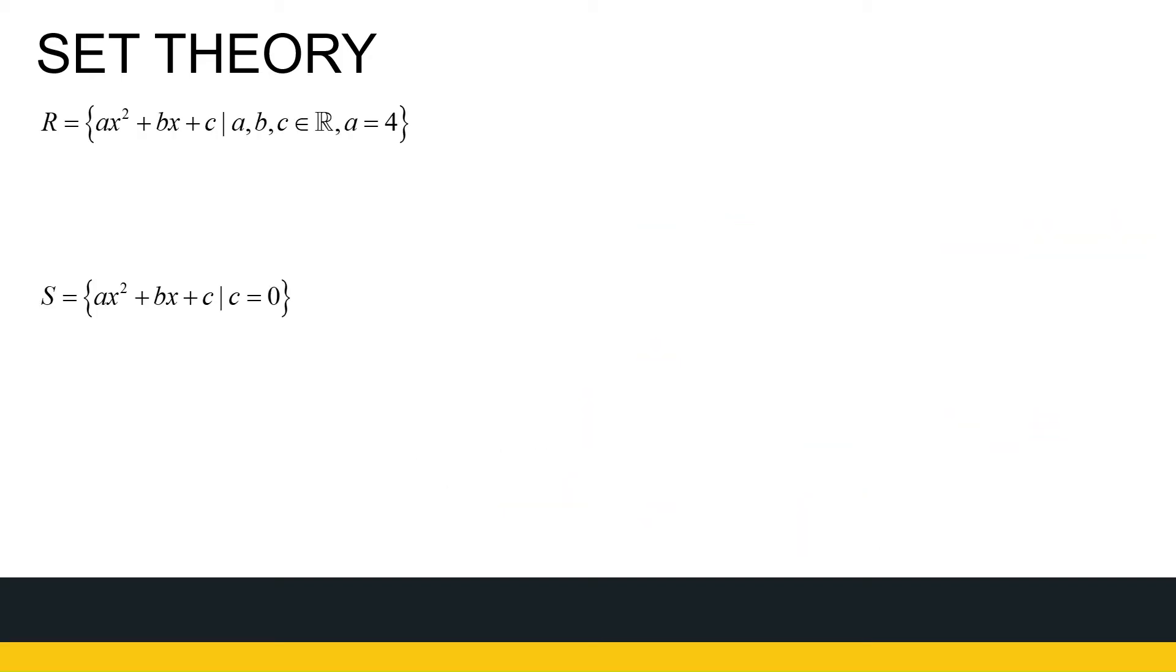We get other types of sets. Sets of polynomials. Now, if we look at a set of polynomials, here I've got a set of polynomials defined. R. It's polynomials where the A value is equal to 4. So, B and C, A, B and C are all real numbers. A is 4. B and C can be anything.